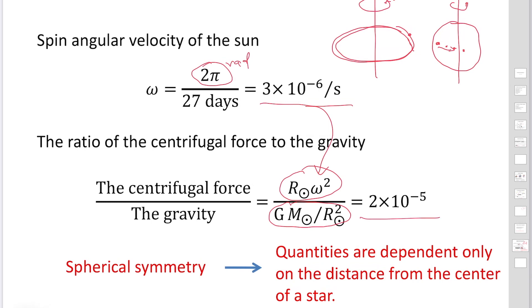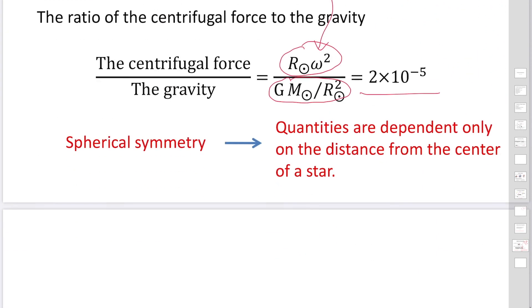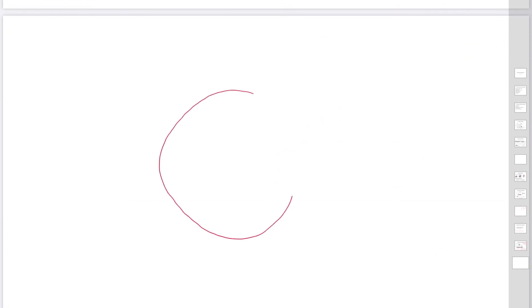It becomes 2 times 10 to minus 5. This number is really, really small. The centrifugal force is much weaker than gravity. We could use spherical figures to describe the shape of our sun. From this, we consider the shape of the sun is a sphere.